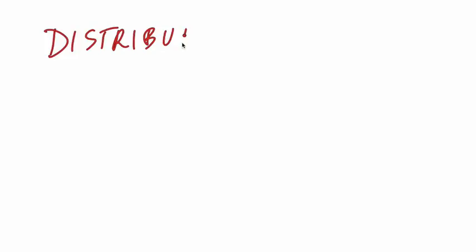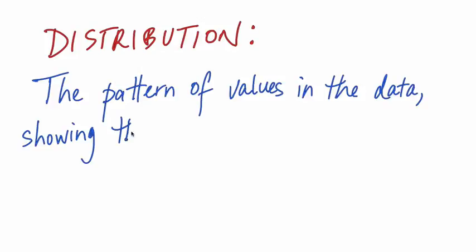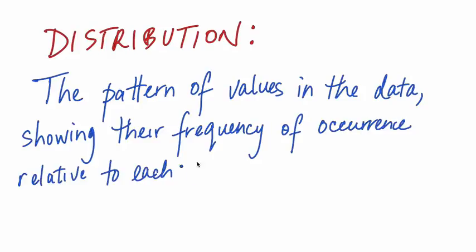The pattern of the values of data is called its distribution. A histogram is useful for visualizing the distribution. We can see whether the data tend to be close to a particular value or maybe multiple values, whether the data varies a lot or a little about the most common values, whether that variation tends to be more above or below the common values, and whether there are unusually large or small values in the data.